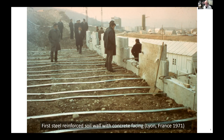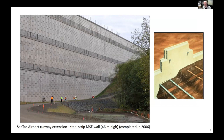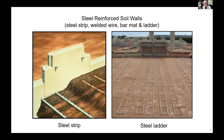That photo was taken in 1971. Since those early days, this technology has become ubiquitous in the civil engineering field. Here is a picture of a 46-meter high steel strip reinforced soil wall. The technology is still the same with these steel strips improving the behavior, but the purpose of these reinforcement elements remains the same regardless of the type and shape of the steel reinforcement.